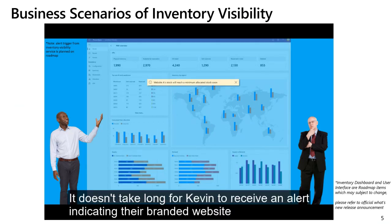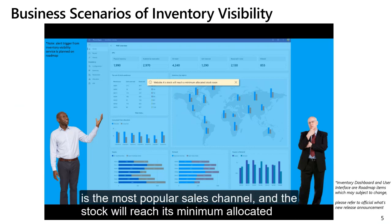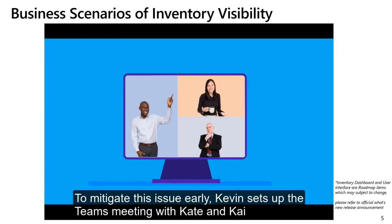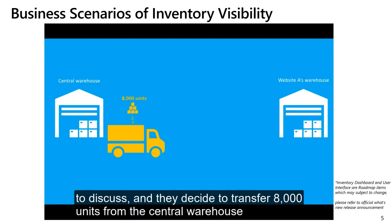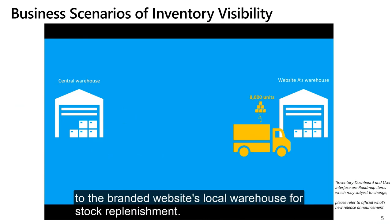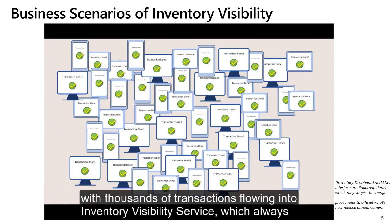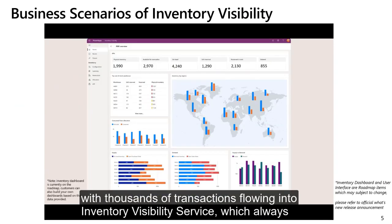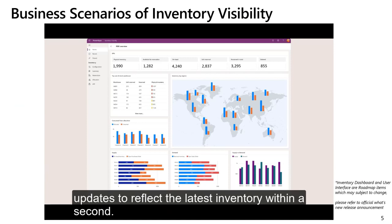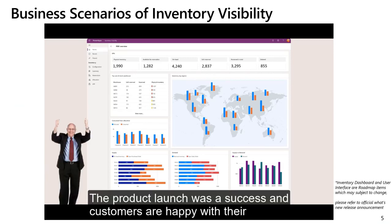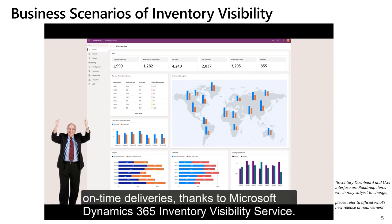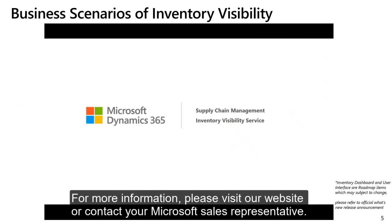It doesn't take long for Kevin to receive an alert indicating their branded website is the most popular sales channel and the stock will reach its minimum allocated stock levels before the official launch day. To mitigate this issue early, Kevin sets up a Teams meeting with Kate and Kai to discuss, and they decide to transfer 8,000 units from the central warehouse to the branded website's local warehouse for stock replenishment. When the launch day finally arrives, customers flood into local and online stores with thousands of transactions flowing into Inventory Visibility Service, which always updates to reflect the latest inventory within a second. The product launch was a success and customers are happy with their on-time deliveries — thanks to Microsoft Dynamics 365 Inventory Visibility Service.